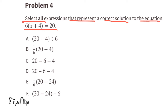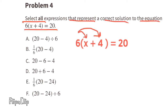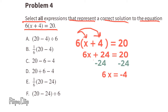Problem number 4: Select all expressions that represent a correct solution to the equation 6 times (x plus 4) equals 20. Distributing: 6x plus 24 equals 20. Subtract 24 from both sides to get 6x equals negative 4. Divide both sides by 6, leaving x equals negative two-thirds.